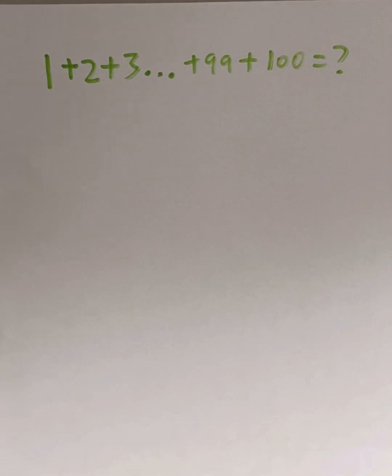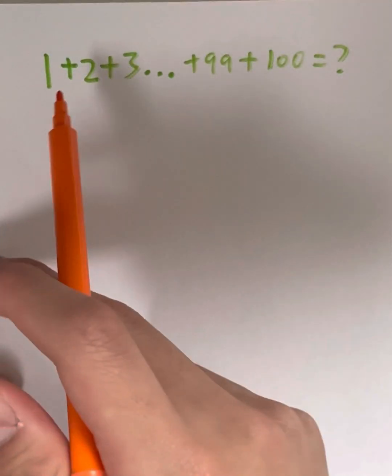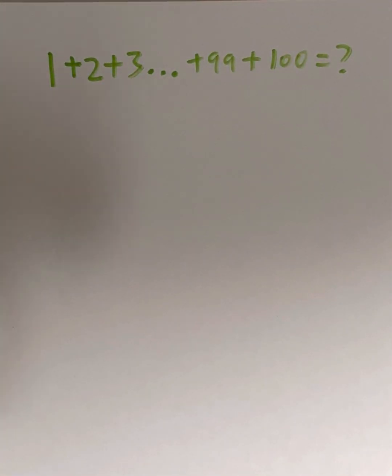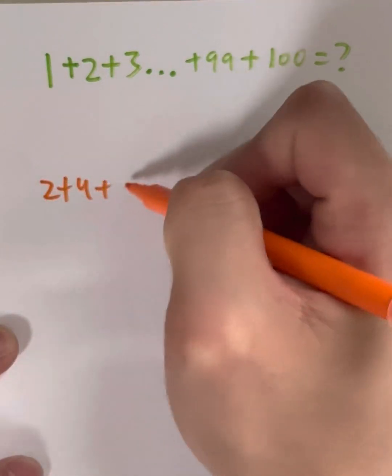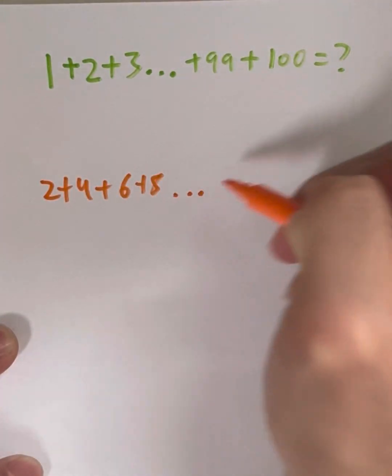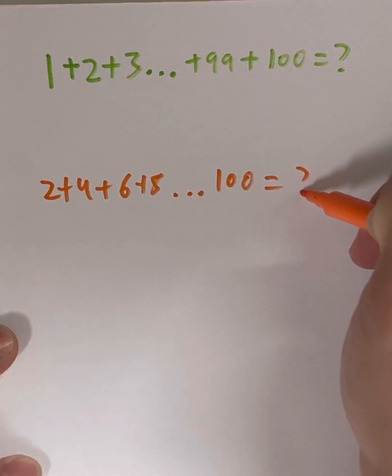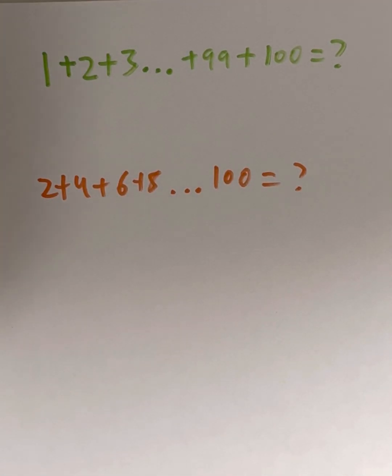So there's a simple pattern that you need to know. Basically, whenever you're adding something in a row, for example, let's say you have 2 plus 4 plus 6 plus 8 all the way up to 100. It's basically the same problem, but how do you solve both of these problems?